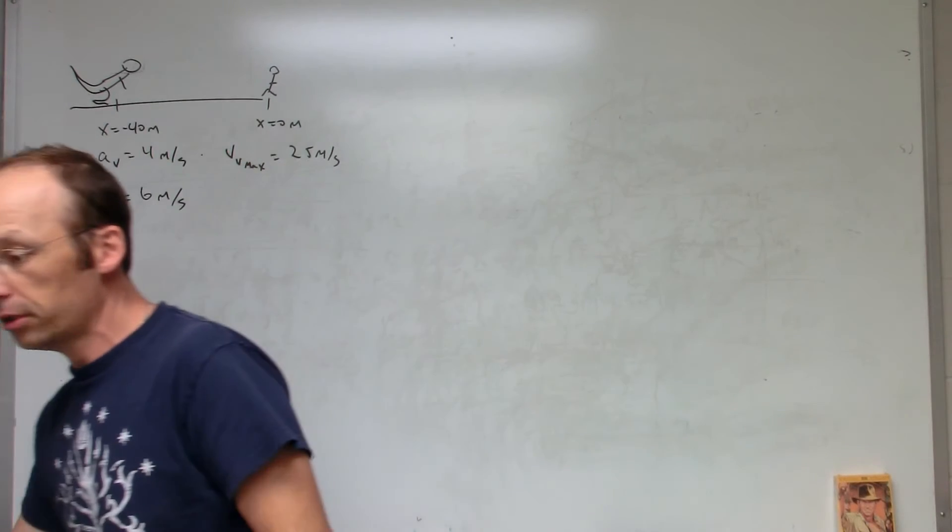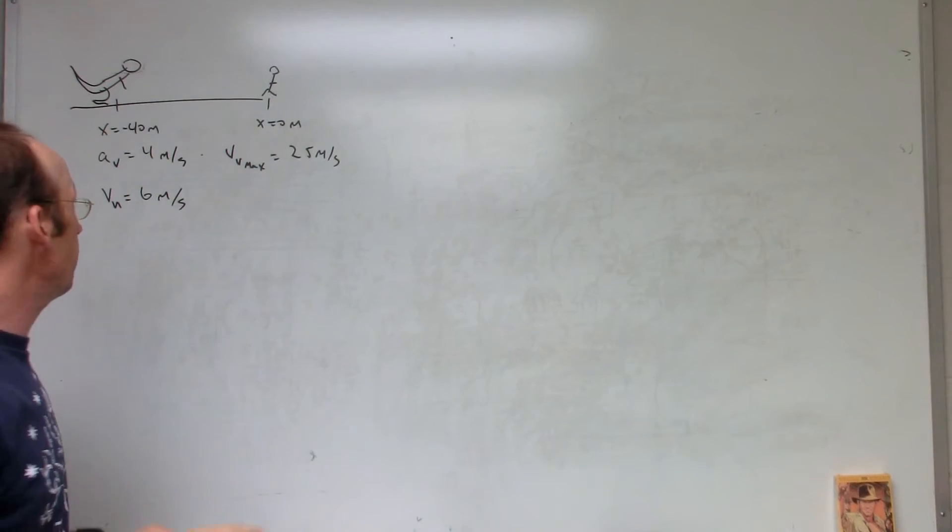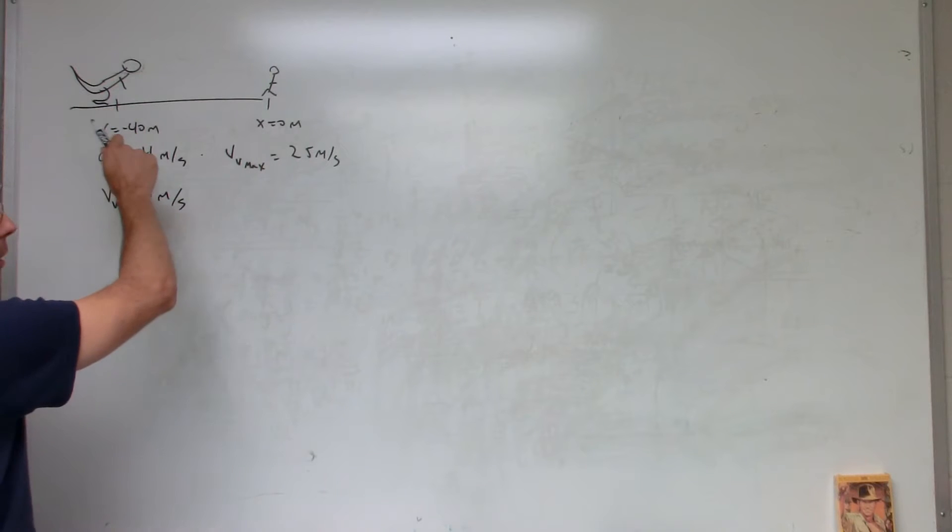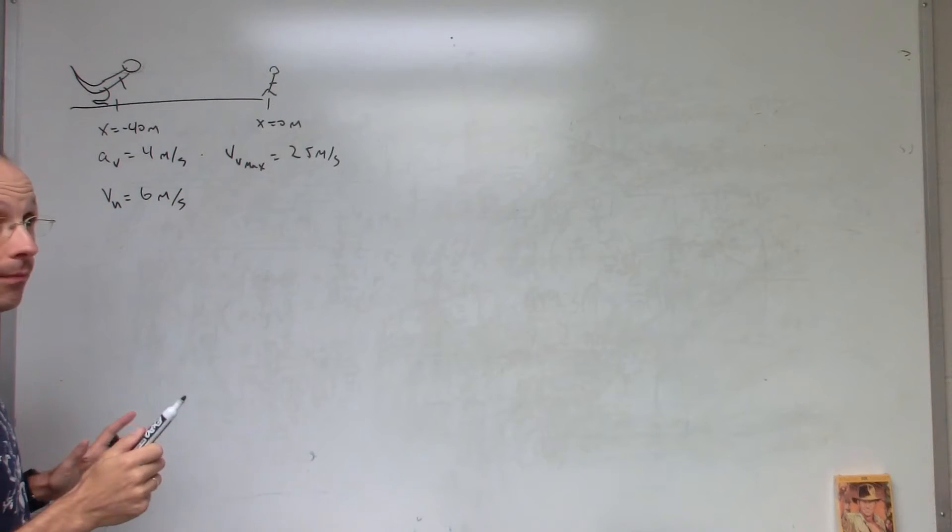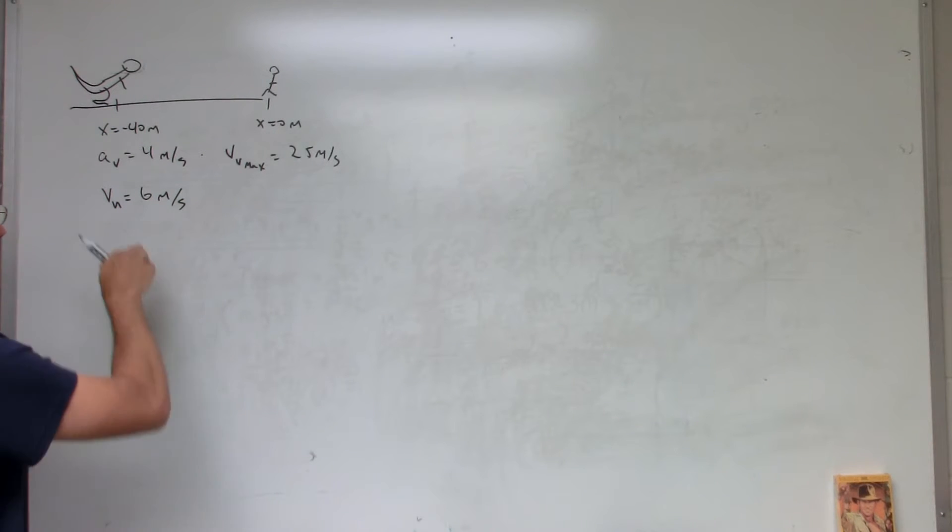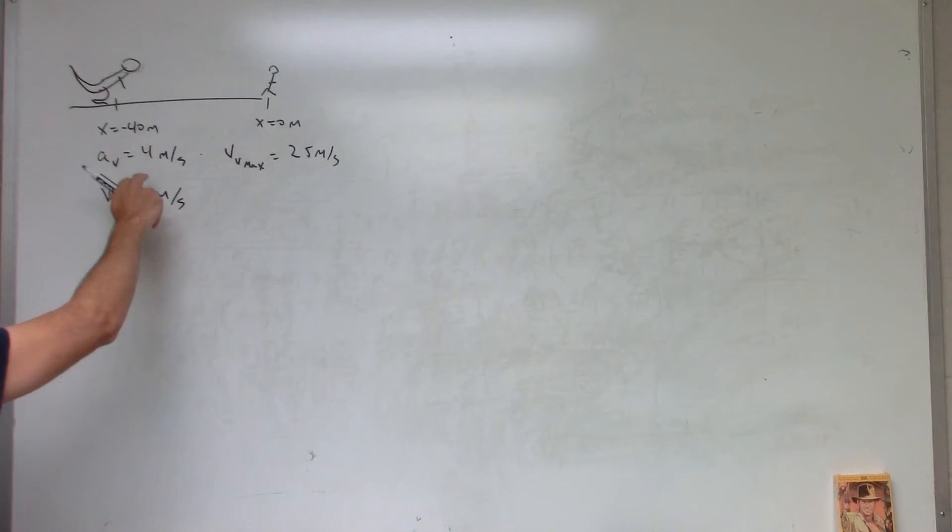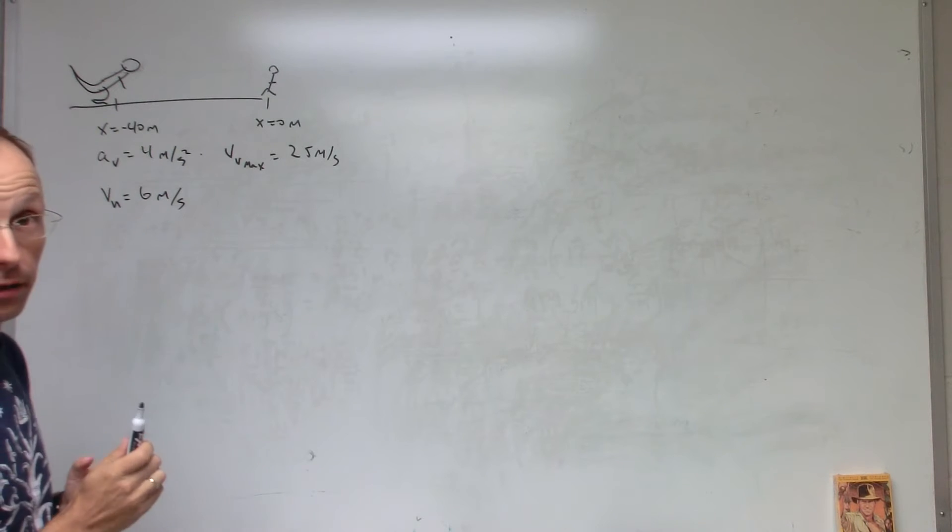So here's the basic situation as described in the problem. There's a Velociraptor 40 meters away from a human. The human can run 6 meters per second. The Velociraptor has an acceleration of 4 meters per second squared, up to a maximum 25 meters per second.